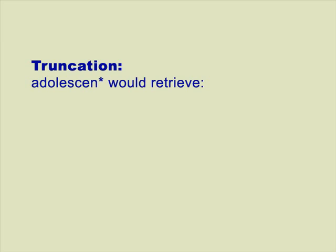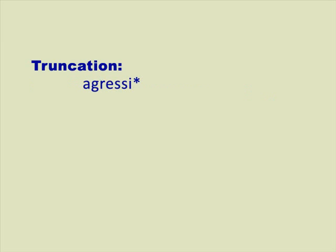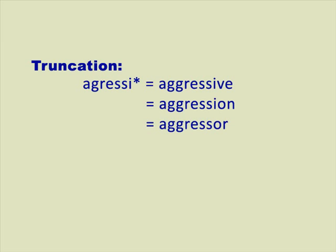Another example: 'adolescent' with an asterisk at the end would retrieve 'adolescent' as a noun or adjective, 'adolescence' as a noun, 'adolescence' with an apostrophe s, and 'adolescence' with a -ce ending. For this particular search, we can use truncation for our other terms as well. For the word 'aggression', we could make it so that it also retrieves documents that talk about aggressive behavior. By using truncation, you're ensuring that you'll retrieve as many relevant documents as possible, regardless of the language they use to describe the topic.